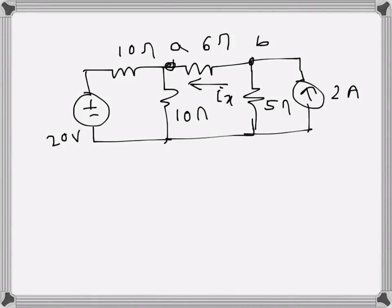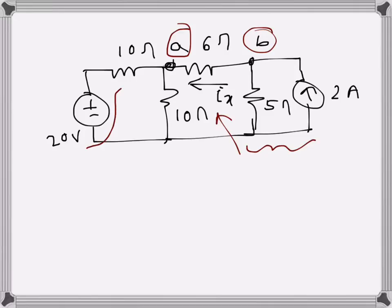For the given circuit, I need to find the Thevenin's equivalent circuit for terminals a and b, and also find the current Ix using that Thevenin circuit information. I will first convert this part — a current source with a parallel resistance — and also convert this part — a voltage source with a series resistance — into equivalent sources. So I will do some source conversion.